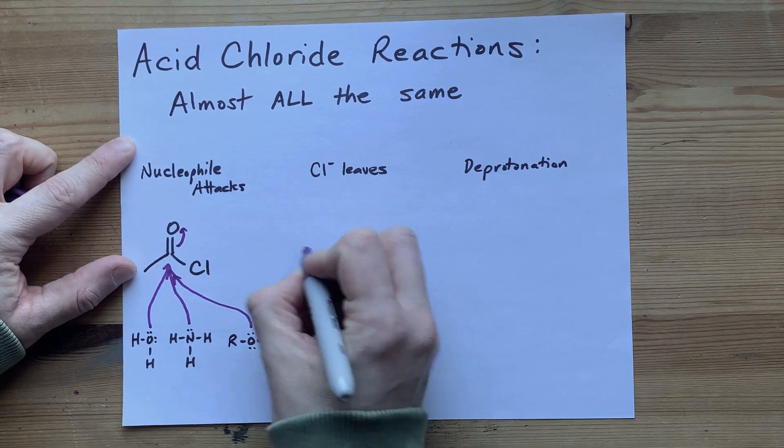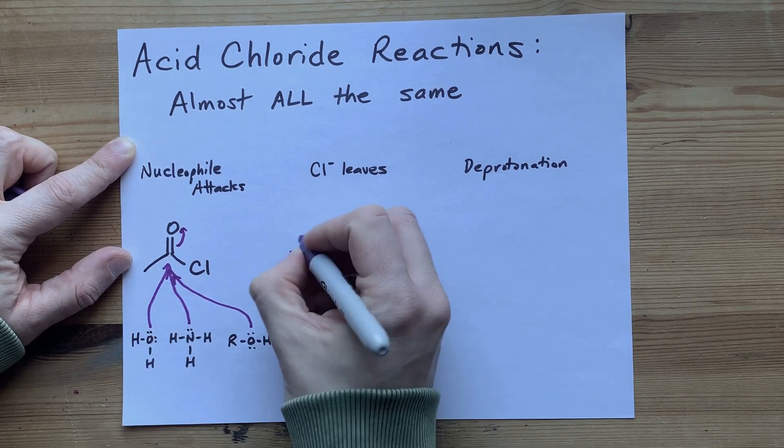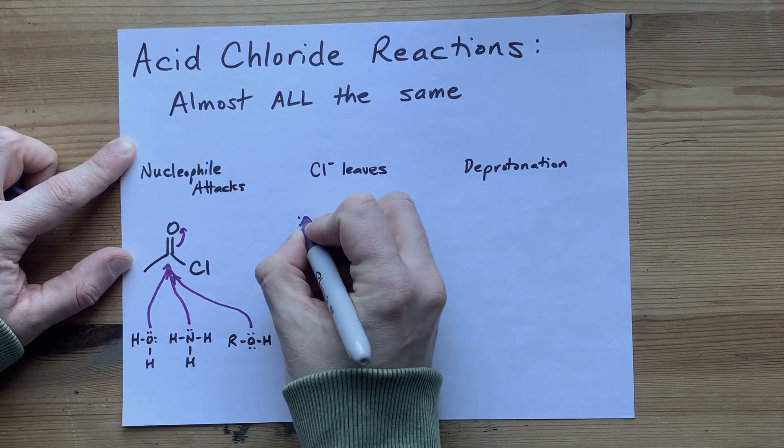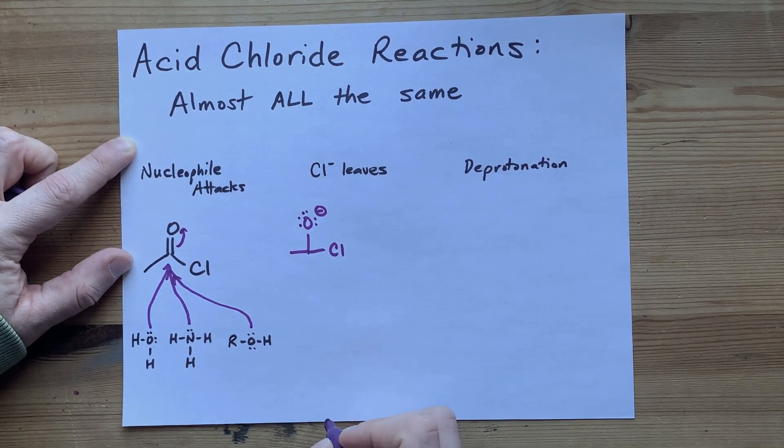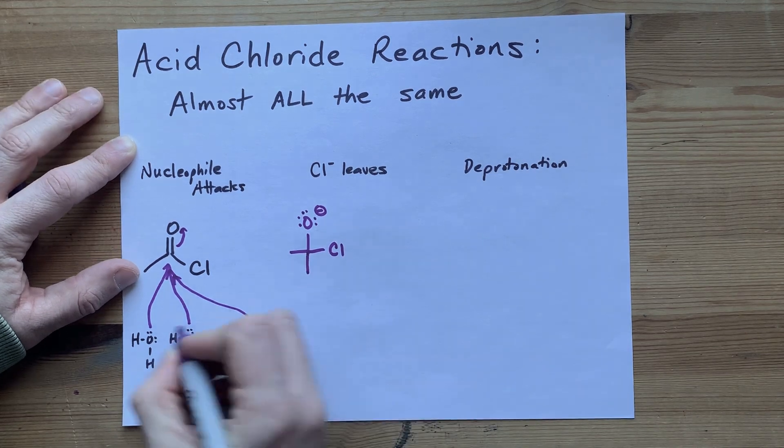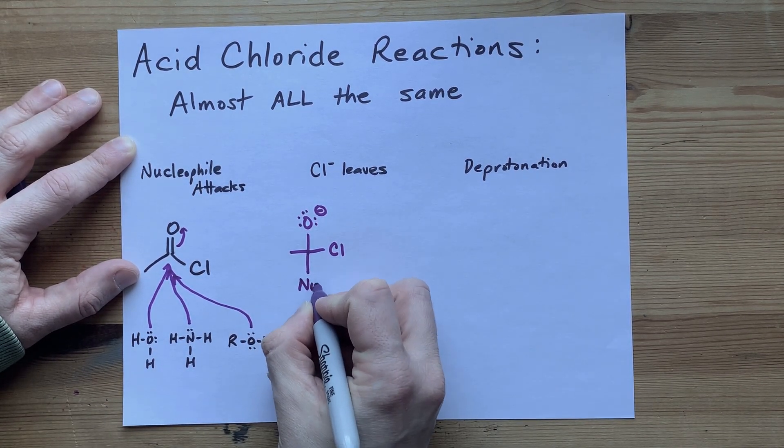The product you're left with is whatever carbon chain you had to the left here, a single bonded oxygen which has a formal charge of minus one. You still have your chlorine attached, and now you have whatever any of these were. Lots of people will write that as NU.